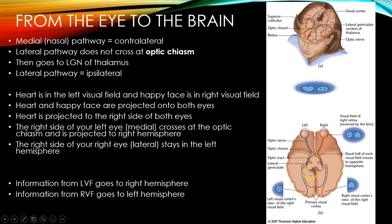Here is a picture of what I was explaining. This is a top view of the brain. We've got somebody looking straight ahead at two objects: a heart in the left visual field and a happy face in the right visual field. Information from the left visual field strikes the right part of the left eye and the right part of the right eye. Information from the right visual field strikes the left portion of the right eye and the left portion of the left eye.